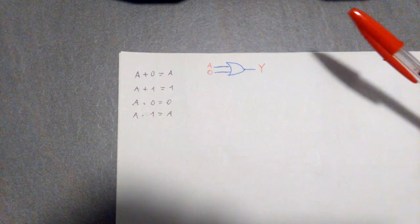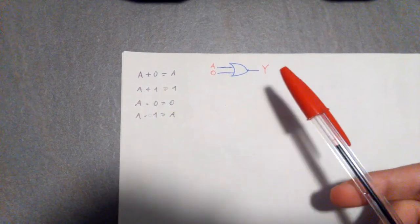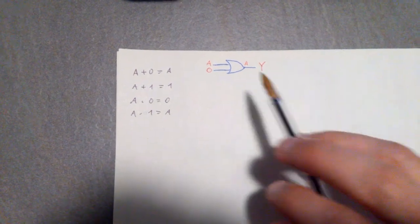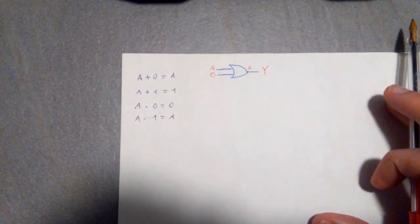...then this OR gate is always going to give me A as an output. So it really depends on the value of A.